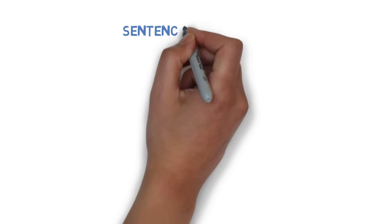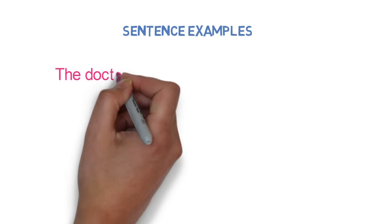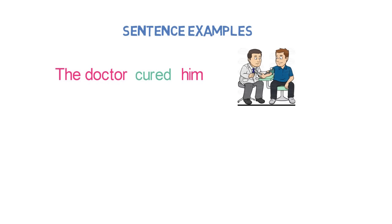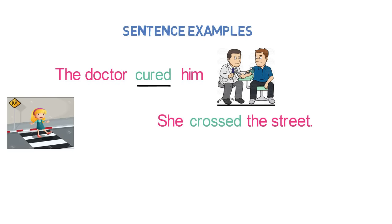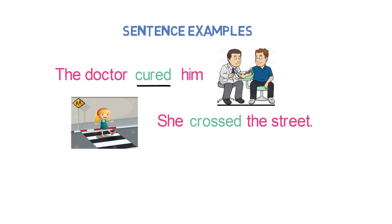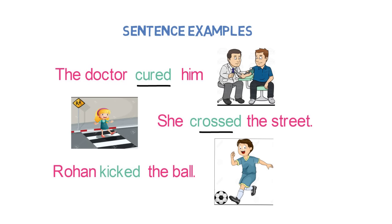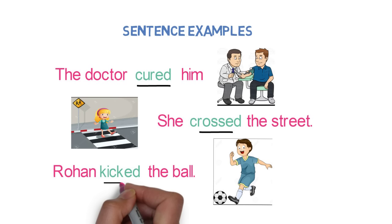Let's look into some more sentence examples having transitive verbs. First: The doctor cured him. Here, 'cured' is the action and 'him' is the direct object, so it's a transitive verb. Next: She crossed the street. Here, 'crossed' is the action and 'street' is the direct object — transitive verb. One more: Rohan kicked the ball. Here, 'kicked' is the action performed by Rohan, and 'ball' is the direct object on which the action is performed — so it's a transitive verb.